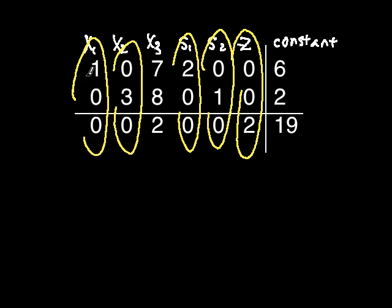For example, here you have 1 under x sub 1 and across from it the constant 6. So you can set up the equation 1 x sub 1 equals 6, or just x sub 1 equals 6. Here you have a coefficient of 3 under x sub 2, so this would be 3 x sub 2 equals 2, or x sub 2 equals 2 thirds.